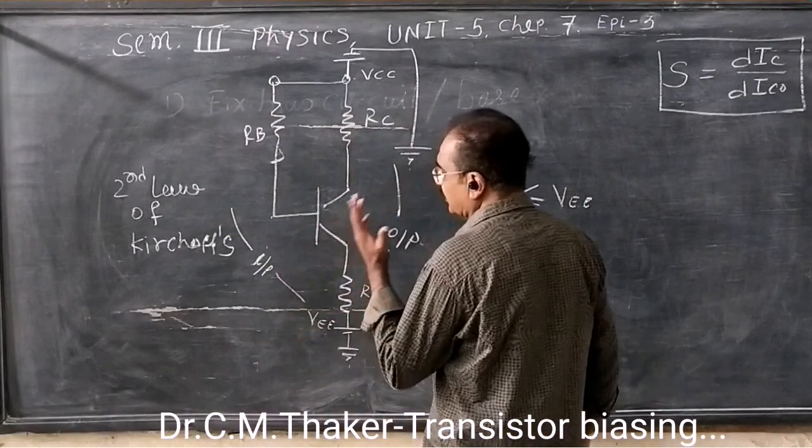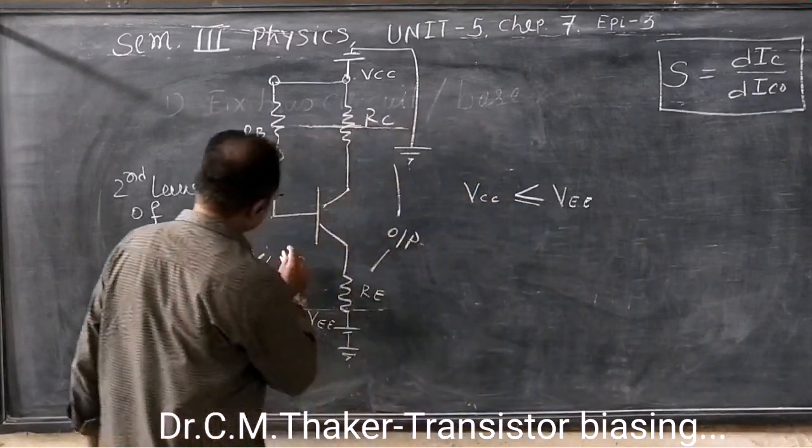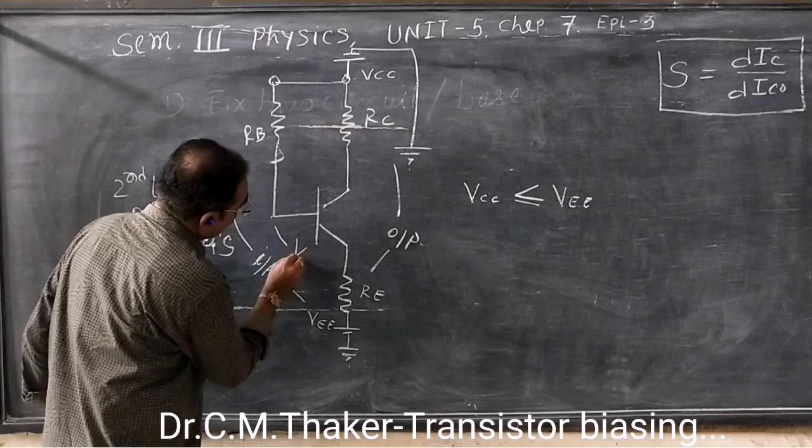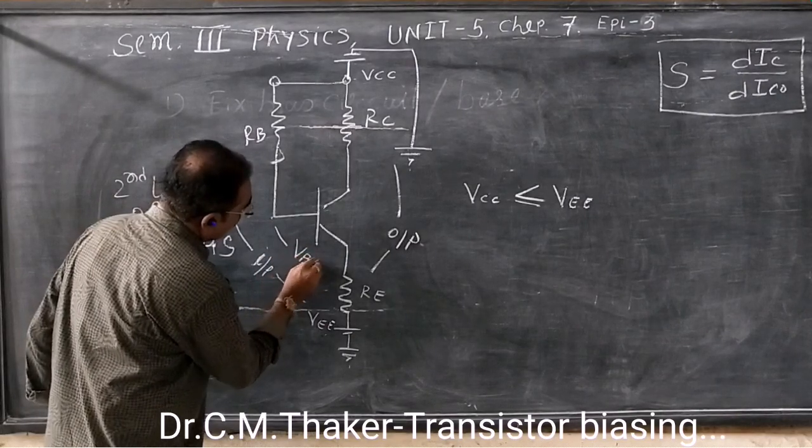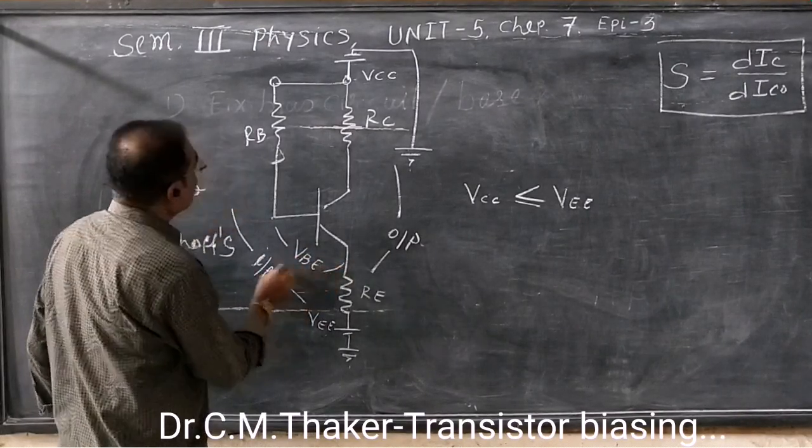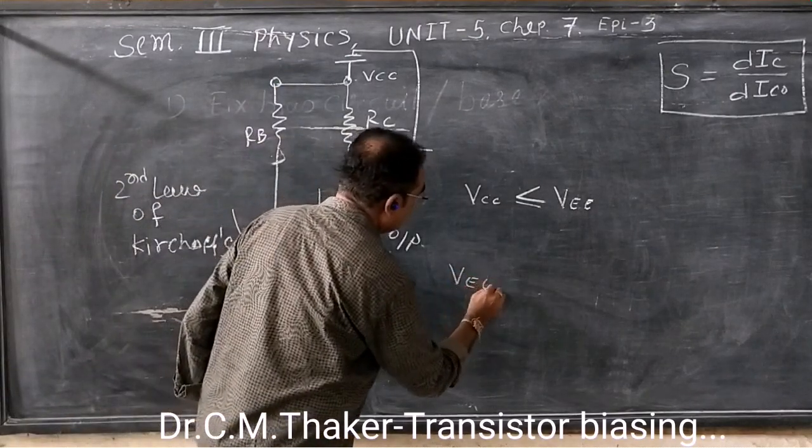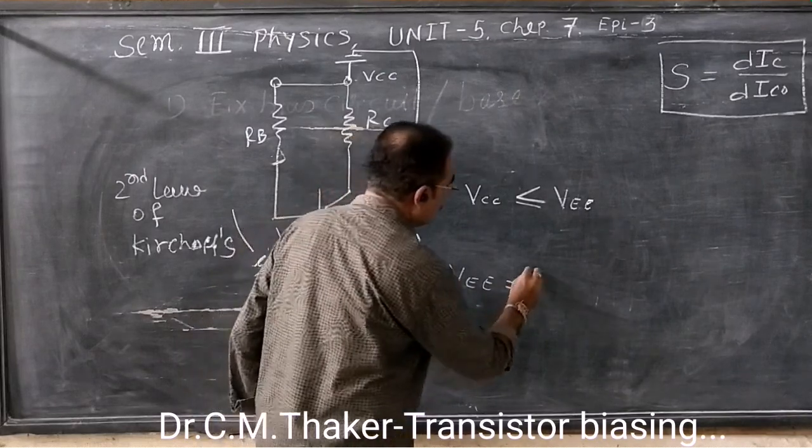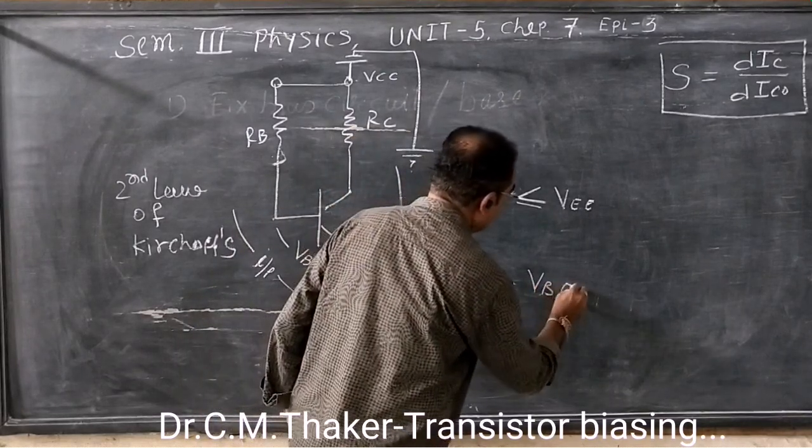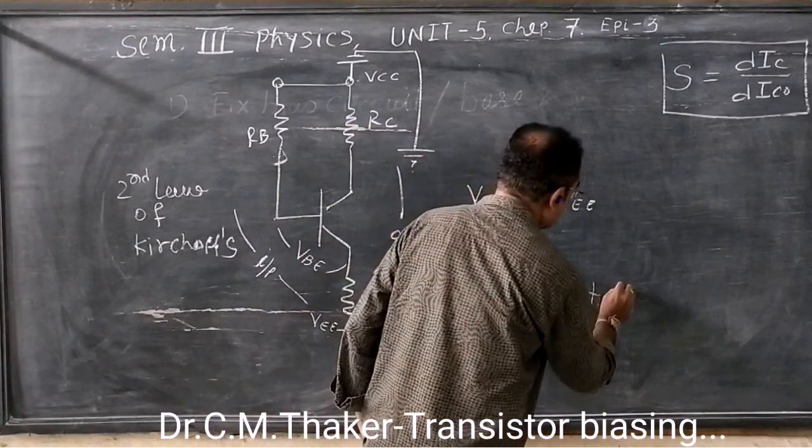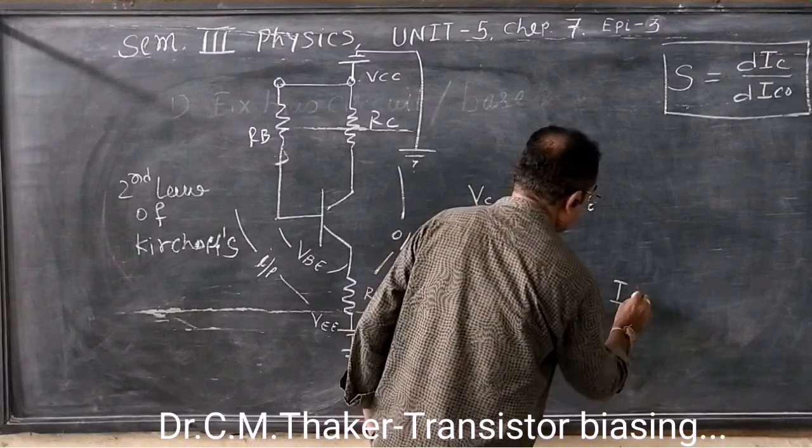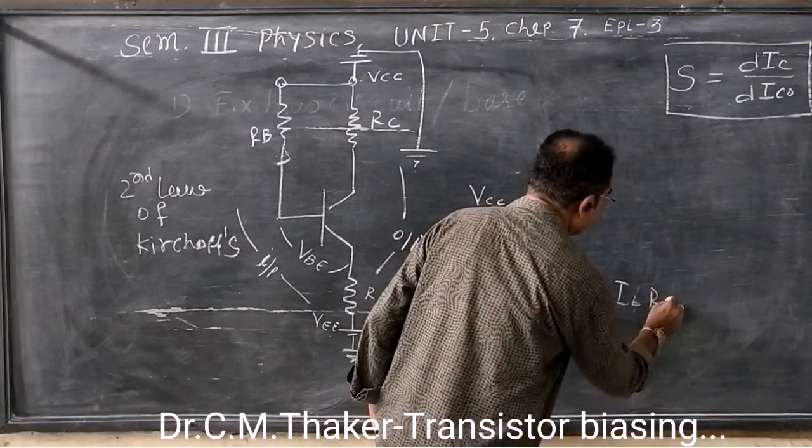So VEE is equal to VBE plus IB times RB. So VEE is equal to VBE plus IB times RB.